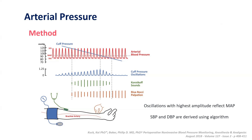During cuff deflation, as arterial blood flow resumes, Korotkoff sounds can help predict systolic and diastolic blood pressures. In invasive monitoring, oscillations are transduced and those with the highest amplitude reflect the mean arterial pressure, while systolic and diastolic blood pressures are derived using algorithms.